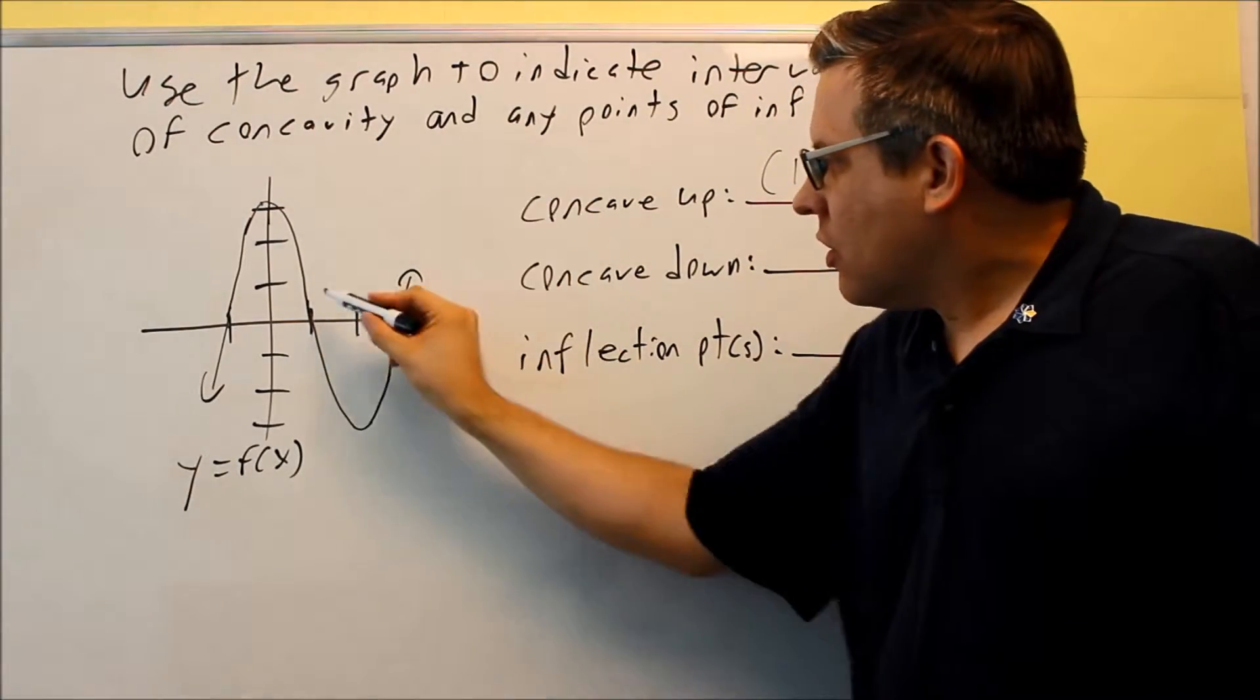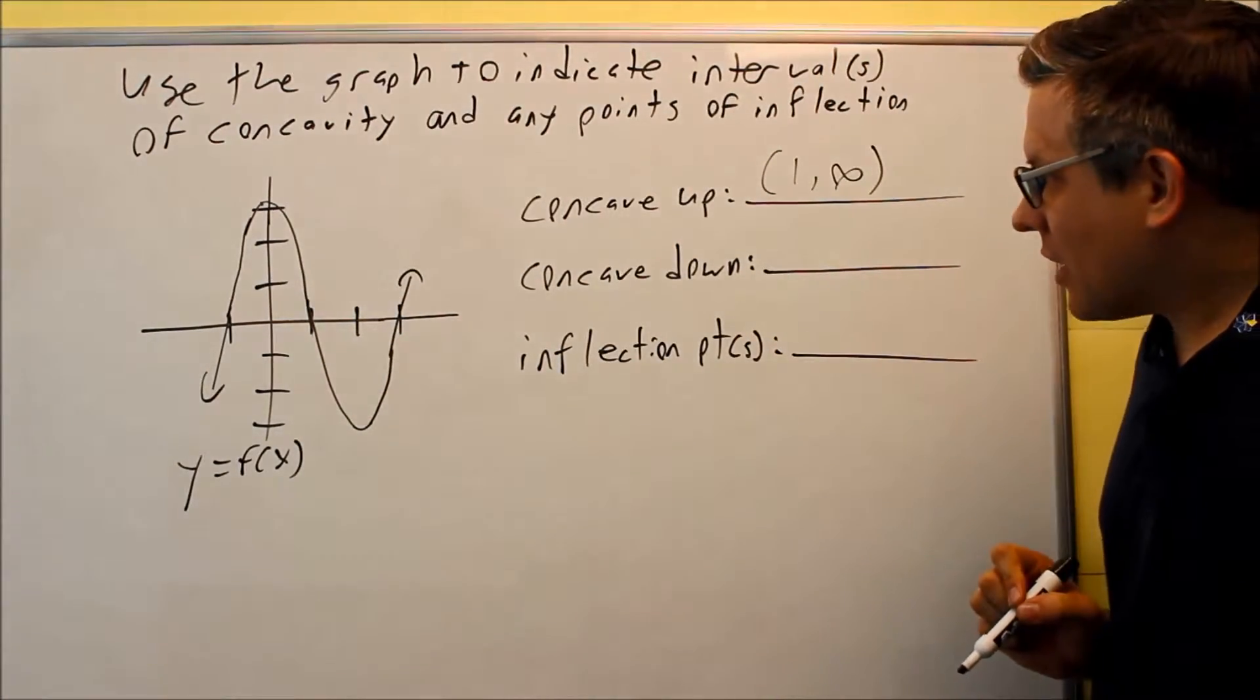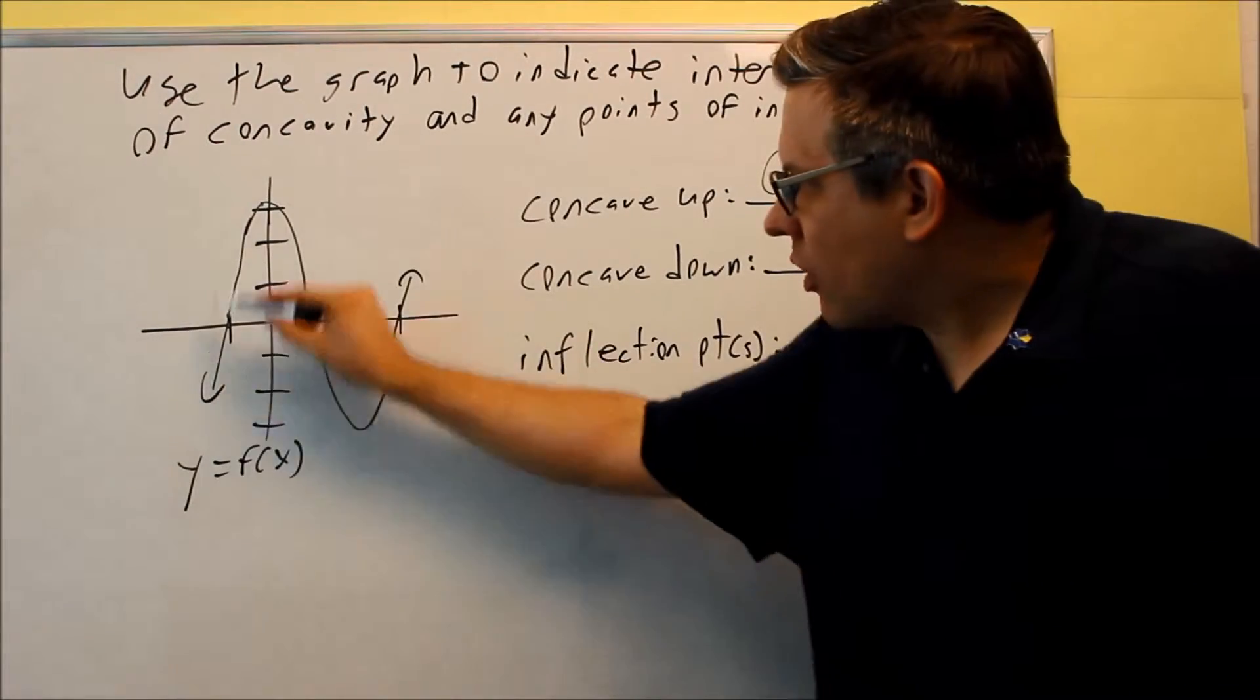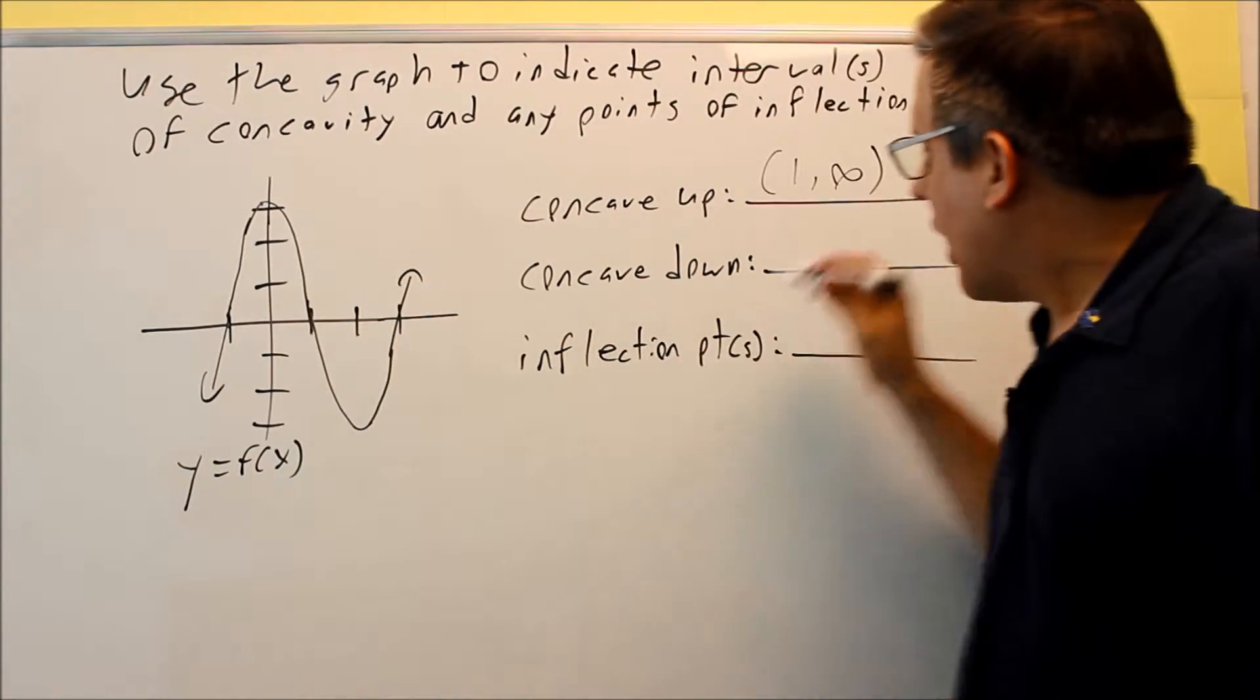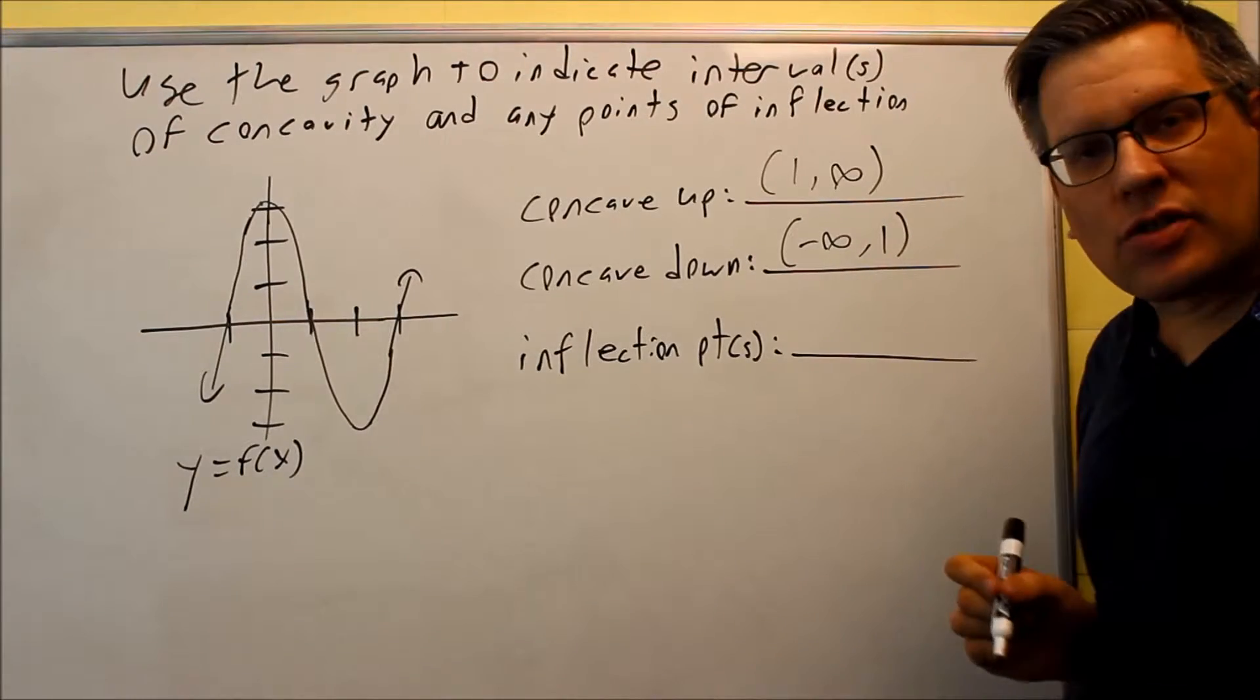So this goes up forever, graph is opening up, so from 1 to infinity it's considered to be concave up. Concave down is where it's opening down. That's going to go from negative infinity to positive 1.